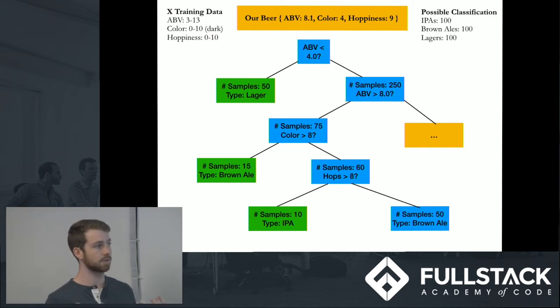So it'll go through our favorite data structure, binary trees. And it'll ask the question, something that's going to help get rid of a lot of data at once. So it'll be like, is alcohol per volume less than 4.0?